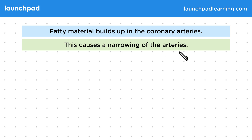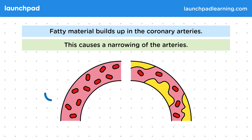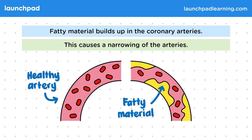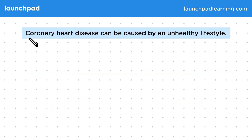On the left-hand side of this diagram you can see what a healthy artery looks like. Over on the right, you can see this artery is clogged with fatty material, which narrows the artery and reduces the flexibility of the artery walls.